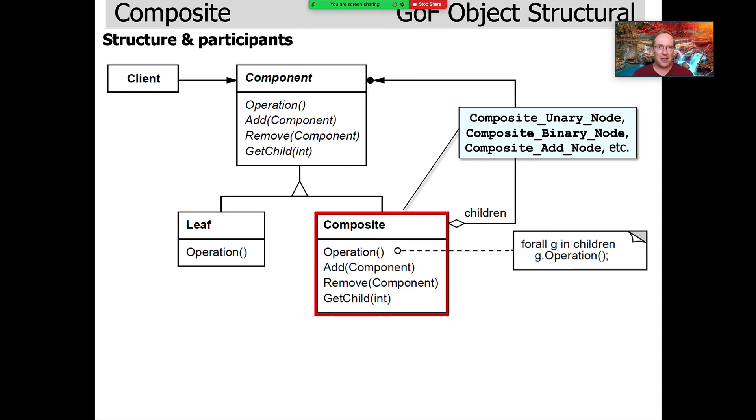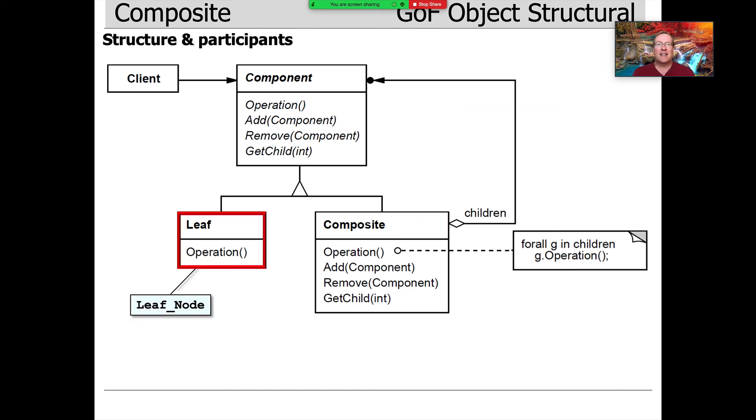They contain multiple subparts, and then the final piece of the puzzle is the leaf subclass or leaf derived class. In our world, that's leaf node. That's the one that's going to actually store a number, like the number three or the number 52 or whatever.